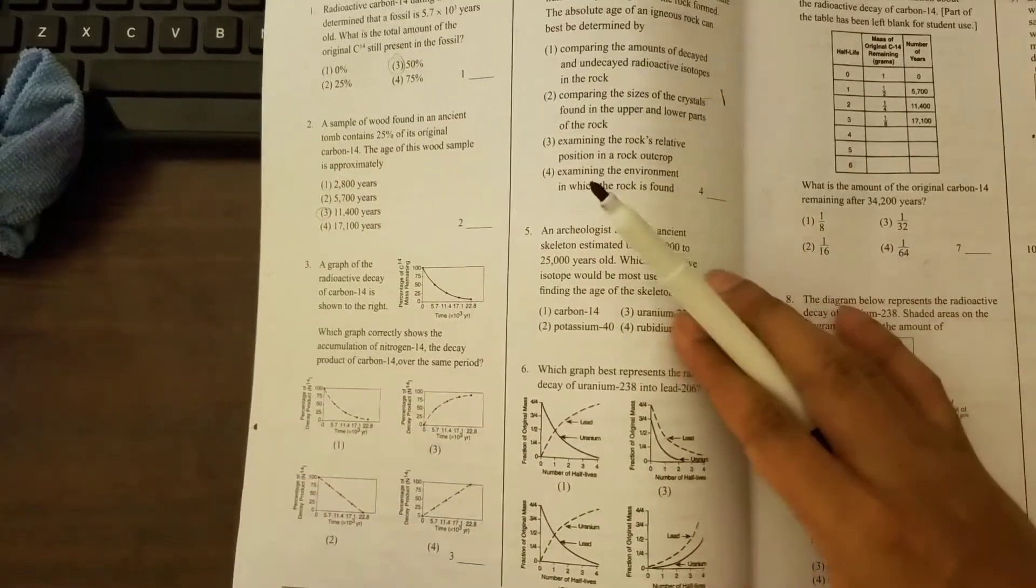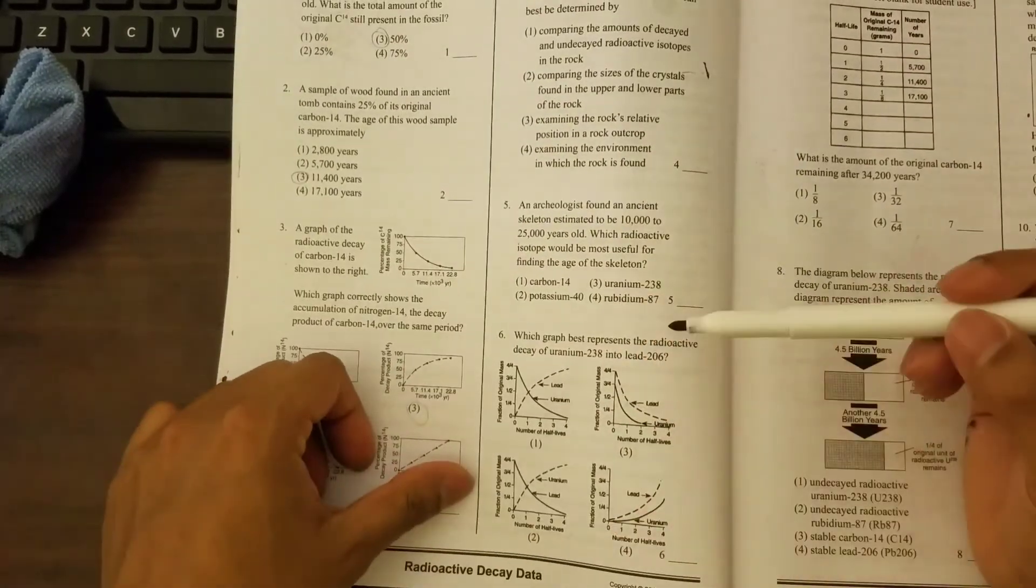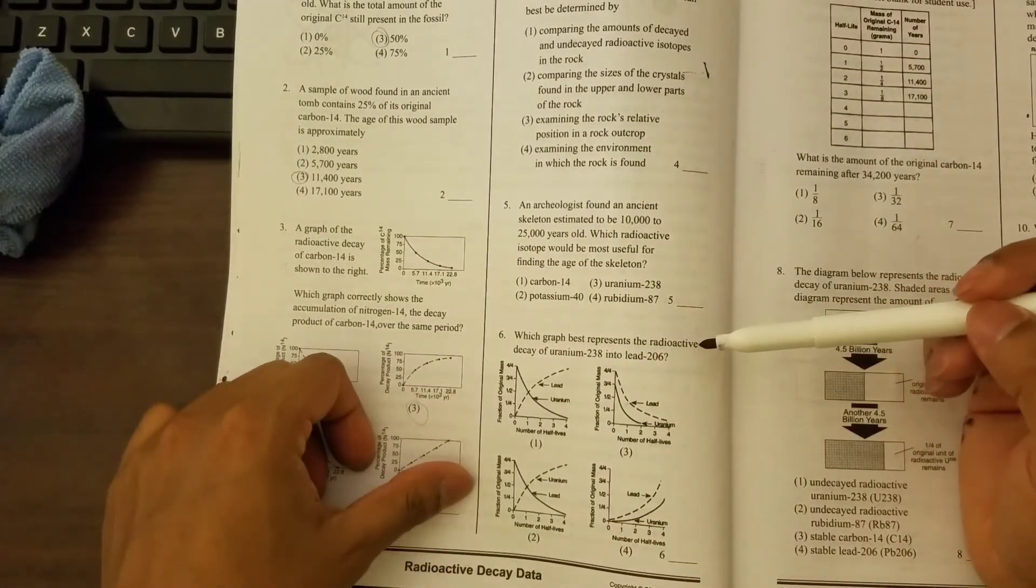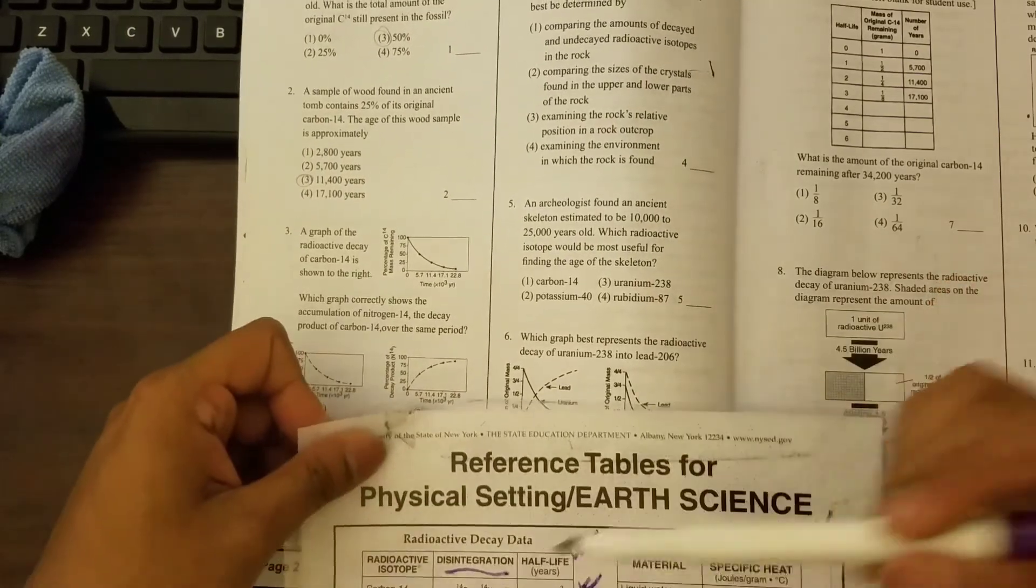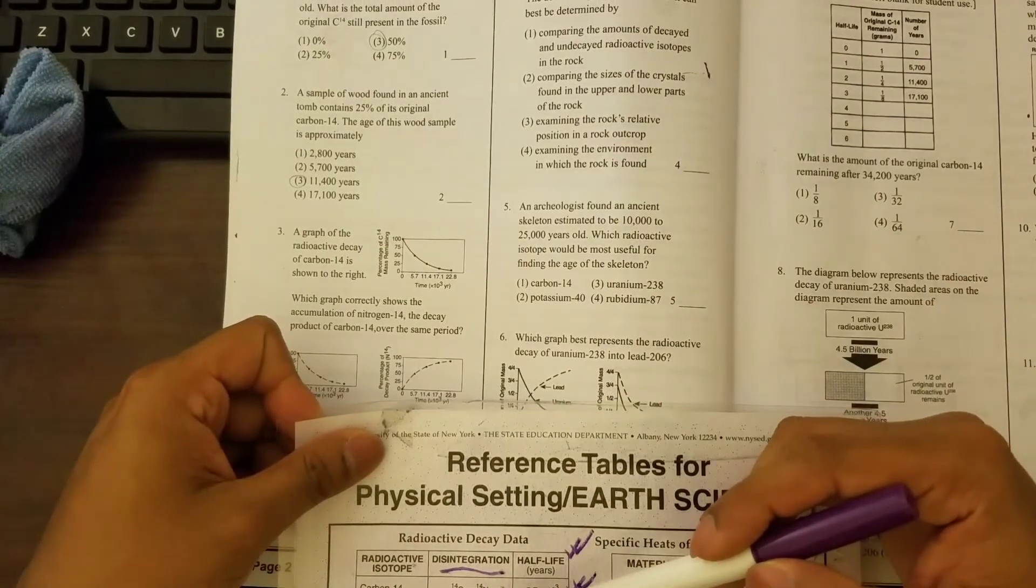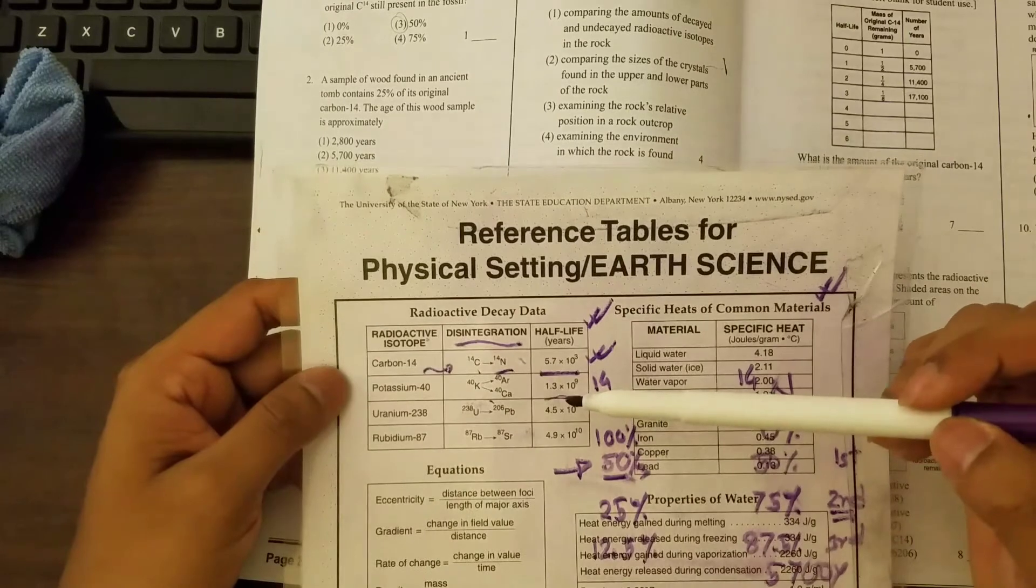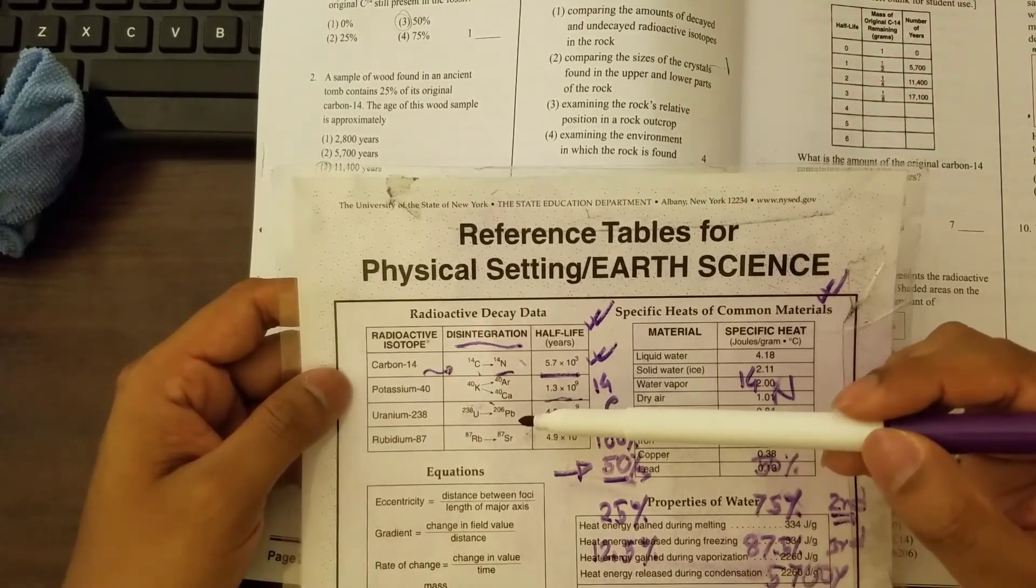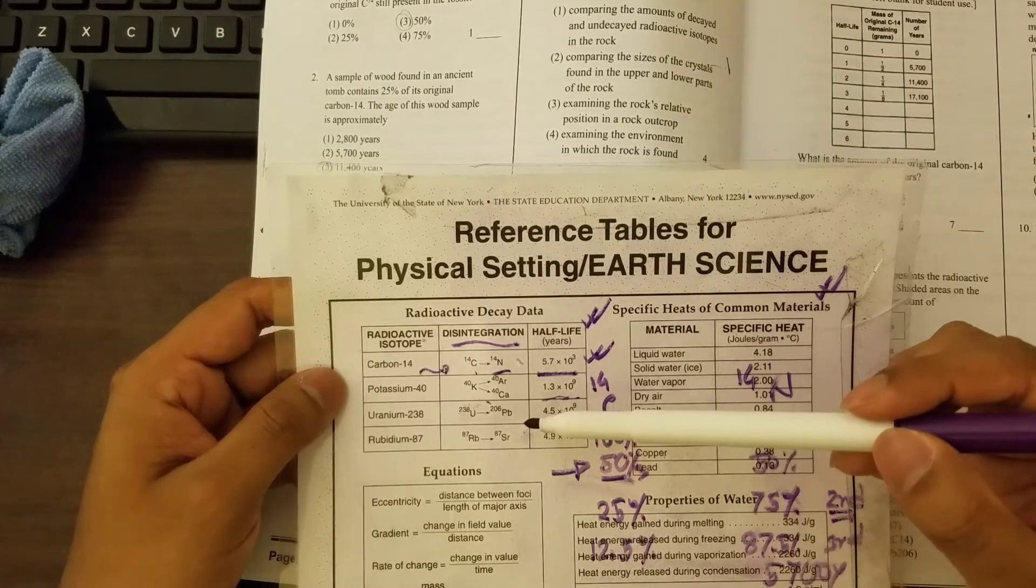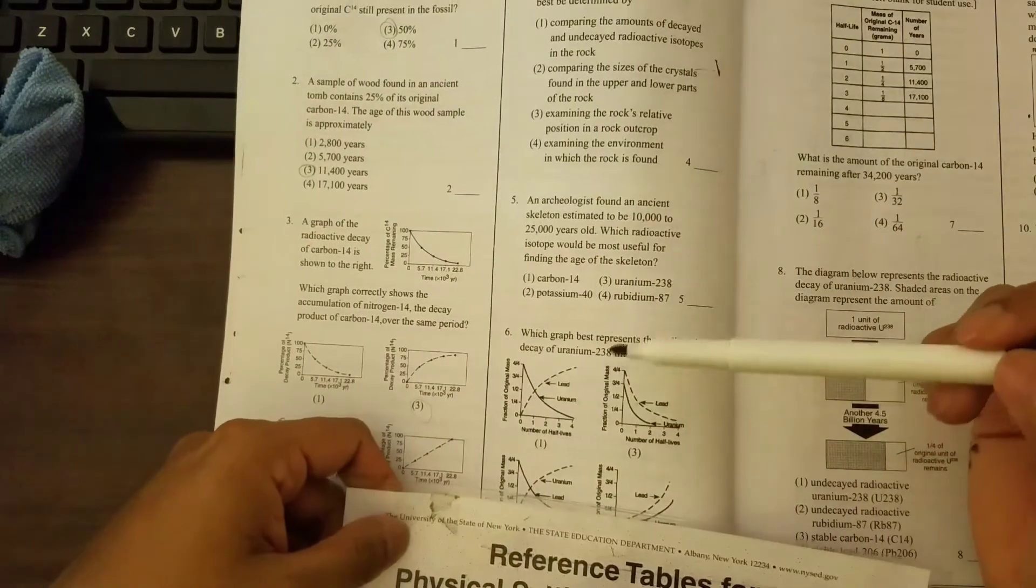Now let's look at question number six. Which graph best represents the radioactive decay of uranium-238 into lead-206? So that's the third one, uranium-238, and it's becoming lead. Pb is actually lead.